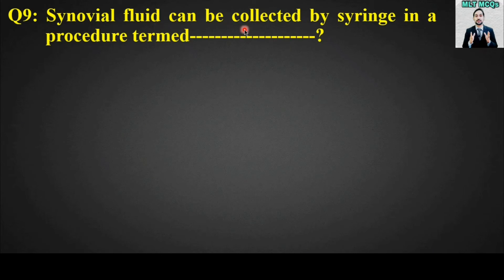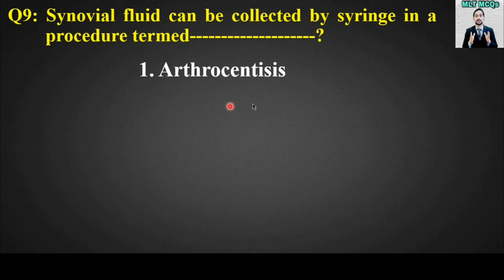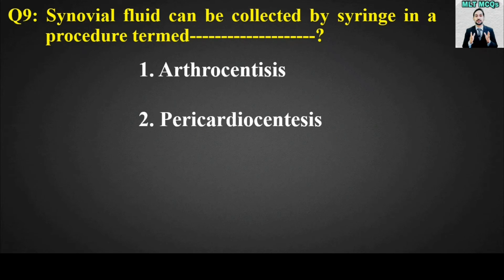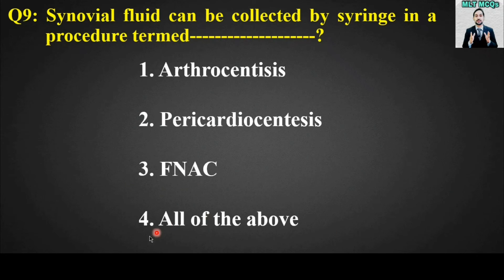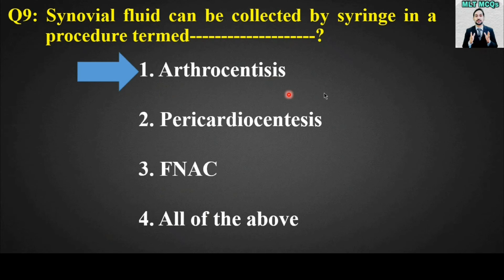MCQ number nine: Synovial fluid can be collected by a syringe in a procedure termed blank. Options are: arthrocentesis, pericardiocentesis, FNAC (fine needle aspiration), or all of the above. The right answer for this MCQ is option number one — synovial fluid can be collected by syringe in a procedure termed arthrocentesis.